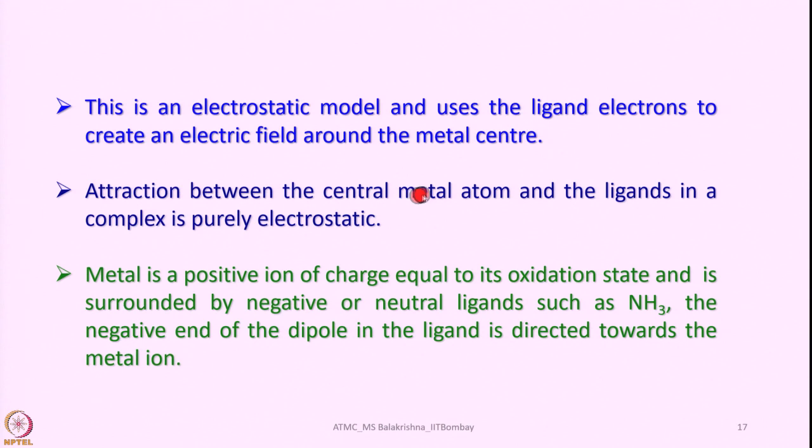Crystal field theory is an electrostatic model that uses the ligand electrons to create an electric field around the metal center. The electric field generated by approaching ligands has a great influence on deciding what geometry a metal should assume. According to crystal field theory, the attraction between the central metal atom and the ligands in a complex is purely electrostatic — if the metal is cationic and the ligands are anionic, it is purely ion–ion interaction.